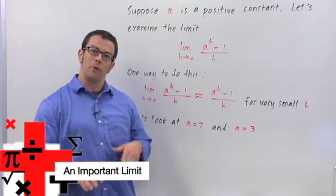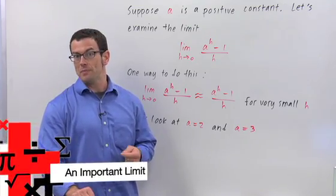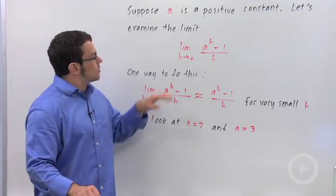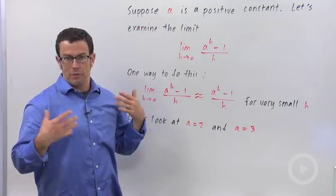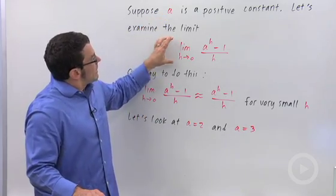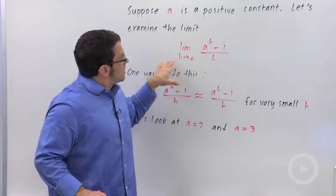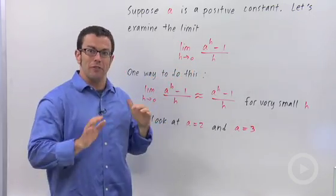We need a really important result before we can go on and talk about the derivatives of exponential functions. It has to do with this limit. Suppose that a is some positive number, some constant. I want to find out what the value of this limit is going to be, and it's going to be different for every different a value.